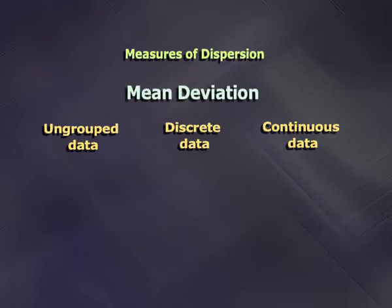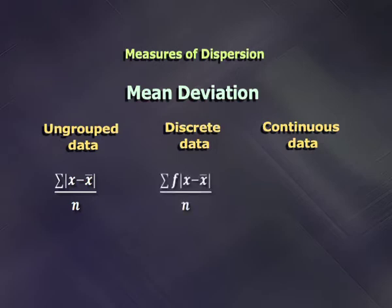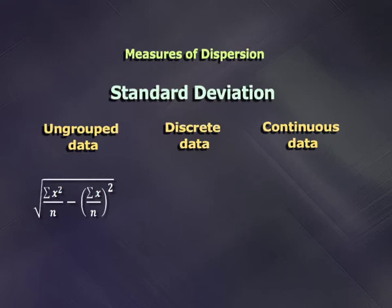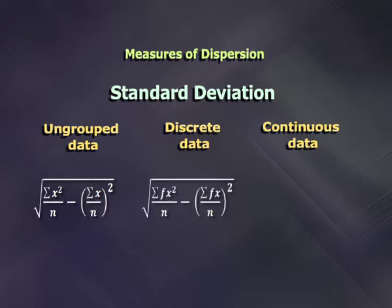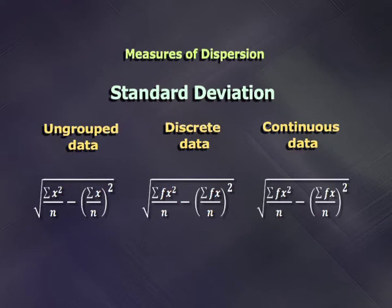For mean deviation of ungrouped data, it is sigma modulus of (x minus x-bar) upon n. For discrete data, it is sigma f multiplied by modulus of (x minus x-bar) divided by n. Same way for continuous data, it is sigma f multiplied by modulus of (x minus x-bar) upon n. For standard deviation of ungrouped data, it is the square root of (sigma x-squared upon n) minus (sigma x upon n) whole squared. For discrete data, it is the square root of (sigma fx-squared upon n) minus (sigma fx upon n) whole squared. Similarly for continuous data, the same formula applies.